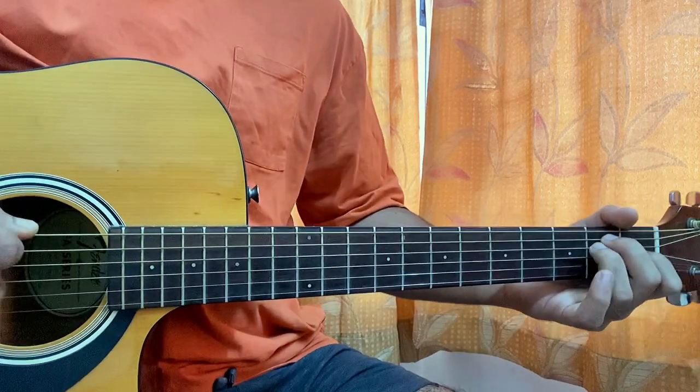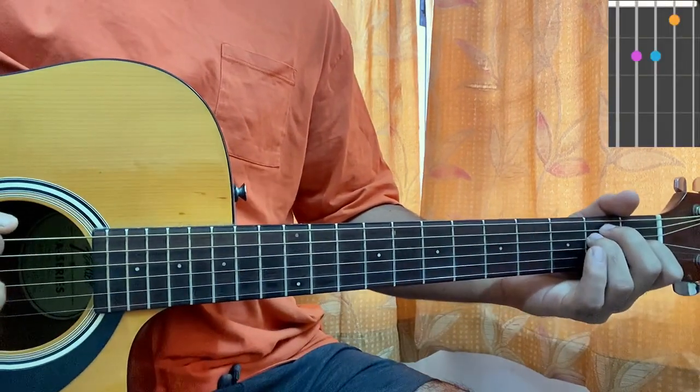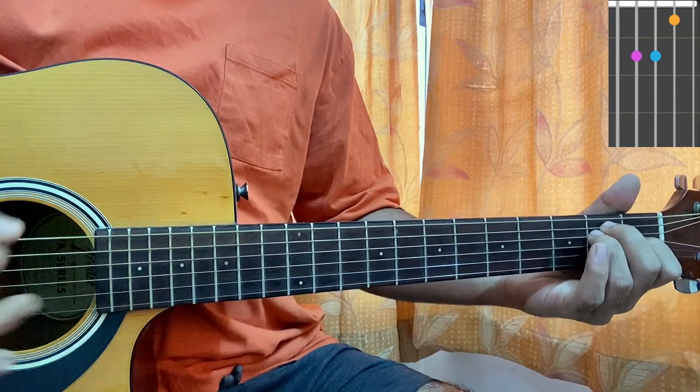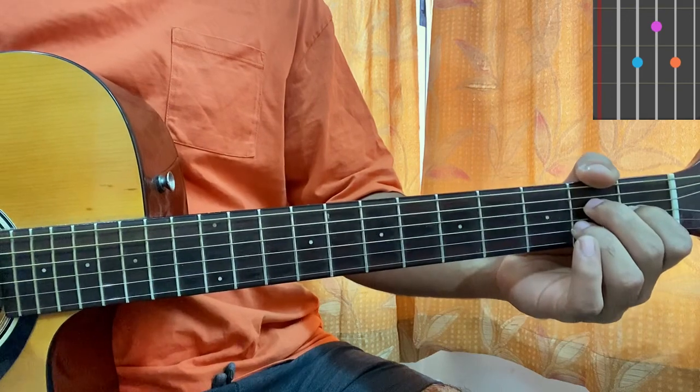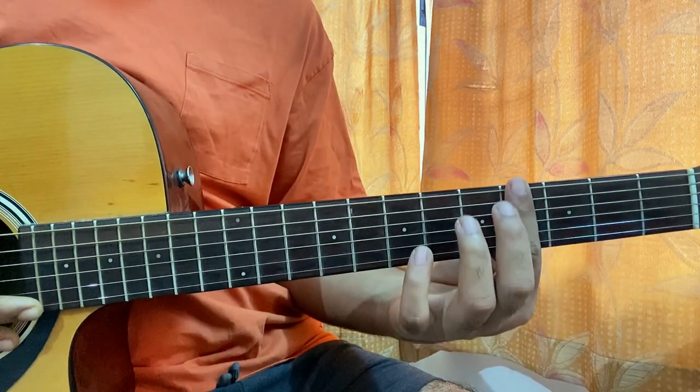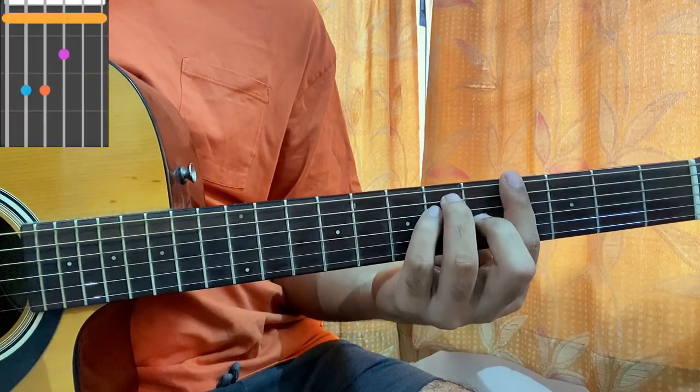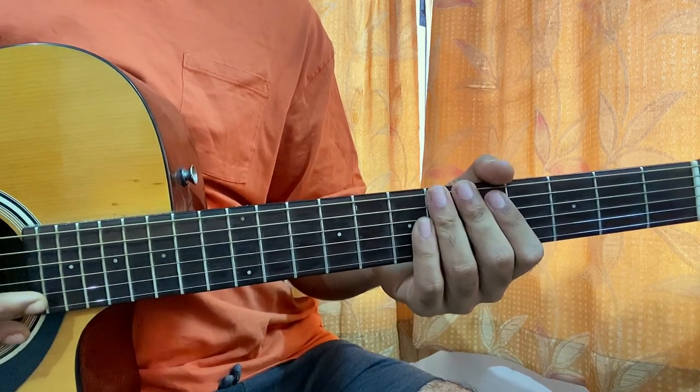We have E major: open, second second first, open open. Then A major seven: mute, open, second first second, open. Then G sharp major chord: barre the whole fourth fret, fifth fret on G string, sixth fret on A and D.